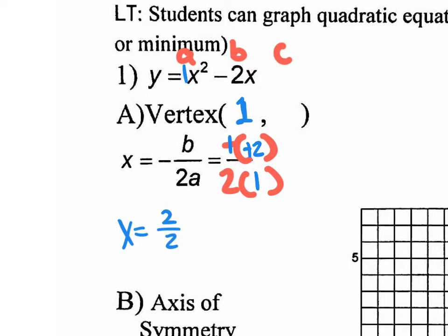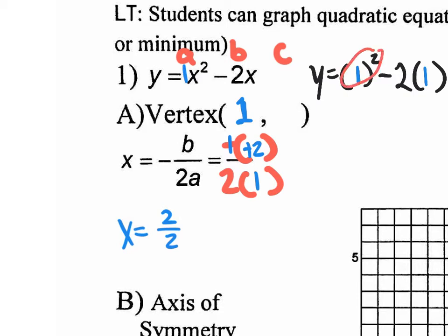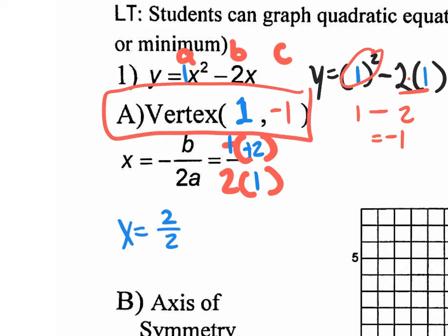We need the y value. We plug it back into the original equation, rewriting with parentheses instead of x's, then plug in the value of 1. Working with PEMDAS — start with exponents: 1 squared is 1. Then multiplication: 2 times 1 is 2. We have a minus sign between them, so 1 minus 2 is negative 1. So the vertex y value is negative 1, and we have our first point — finding the vertex.